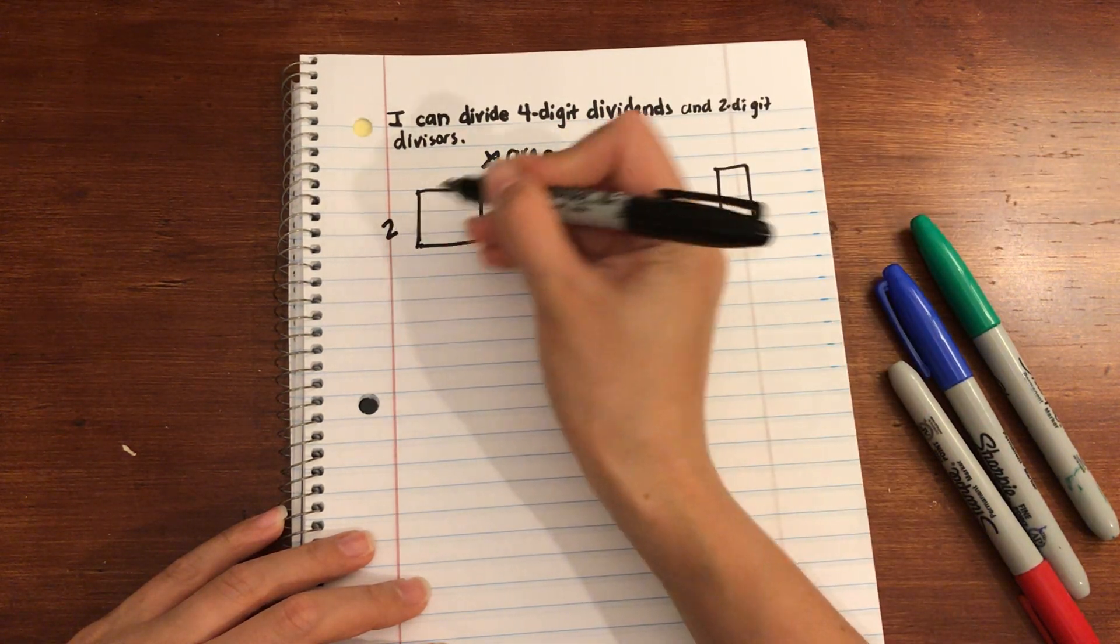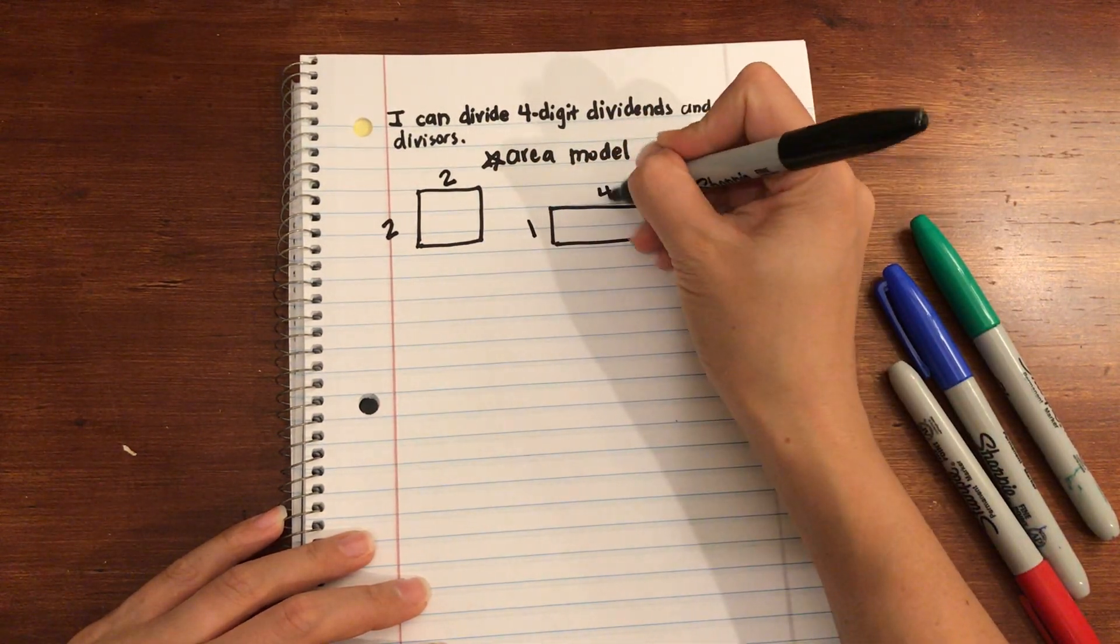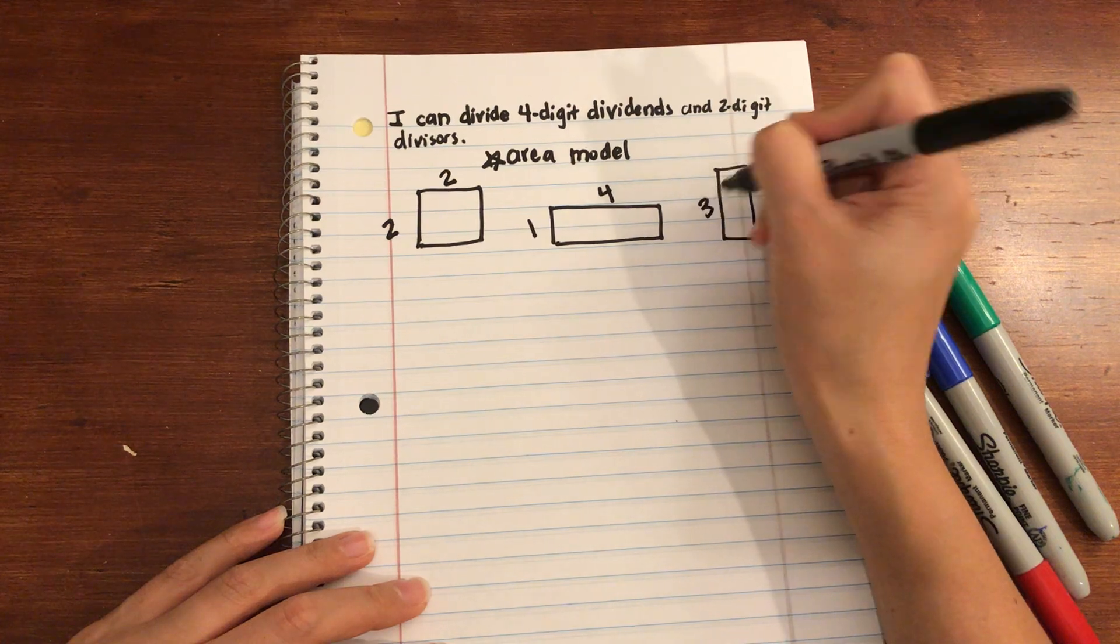So we'll say this is a 2 by 2, so 2 centimeters by 2 centimeters. This is a 1 by 4 and we'll call this a 3 by 1.